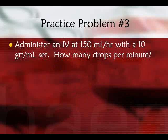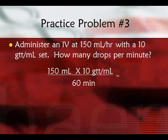Practice problem three: administer an IV at 150 mL per hour with a 10-drop per mL set — how many drops per minute? Set it up as 150 mL times 10 drops per mL over 60 minutes. That gives 1500 over 60, or 25 drops per minute.